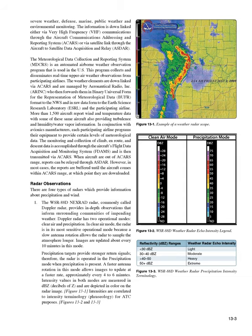Example full METAR: KGGG 161753Z AUTO 14021G26KT 3/4SM -TSRA BKN008 OVC012CB 18/17 A2970 RMK PRESFR. Explanation: Routine METAR for Gregg County Airport for the 16th day of the month at 1753Z, automated source. Winds are 140 at 21 knots gusting to 26. Visibility is 3/4 statute mile. Thunderstorms with heavy rain and mist. Ceiling is broken at 800 feet, overcast at 1,200 feet with cumulonimbus clouds. Temperature 18°C and dew point 17°C. Barometric pressure is 29.70 HG and falling rapidly.